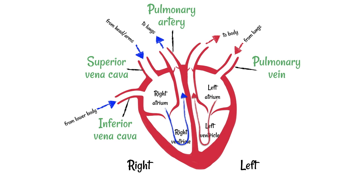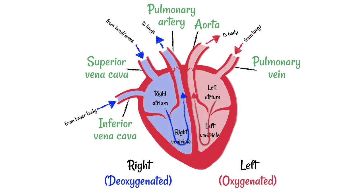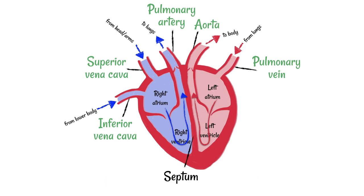The vessel that it does this through is the aorta. As you can see by the blue and the red arrows, the right side deals with deoxygenated blood and the left side deals with oxygenated blood, and these two types of blood must always be kept separate. They're kept separate by this wall in the center of the heart, which is called the septum.